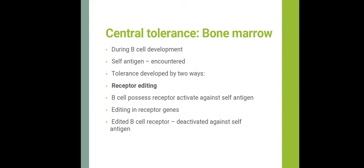In the bone marrow, when developing immature B-cells encounter a self-antigen during development, tolerance is established by two ways: receptor editing and negative selection. In receptor editing, the B-cell reactivates the machinery for antigen receptor gene rearrangement — mainly light chain genes — so a different B-cell receptor is produced which no longer recognizes the self-antigen, effectively editing the receptor genes on the B-cell.